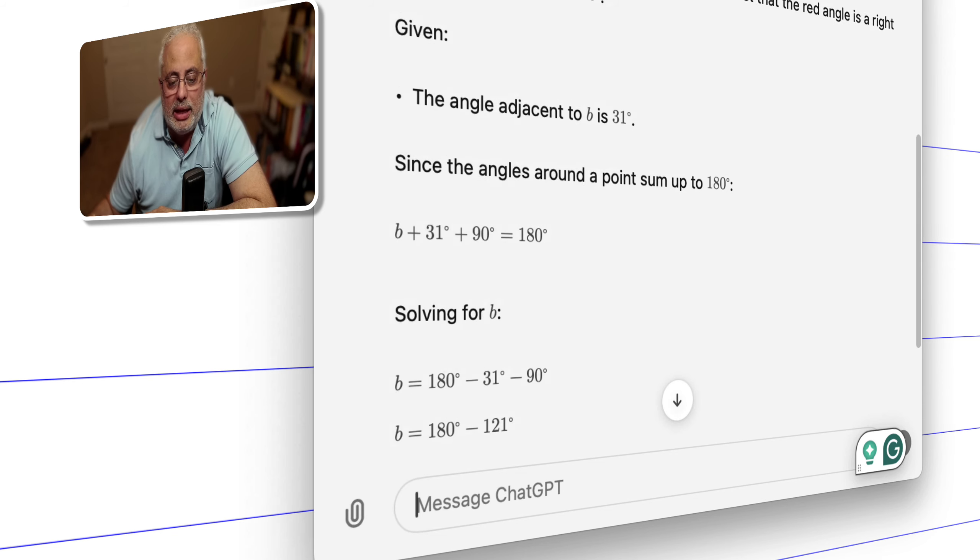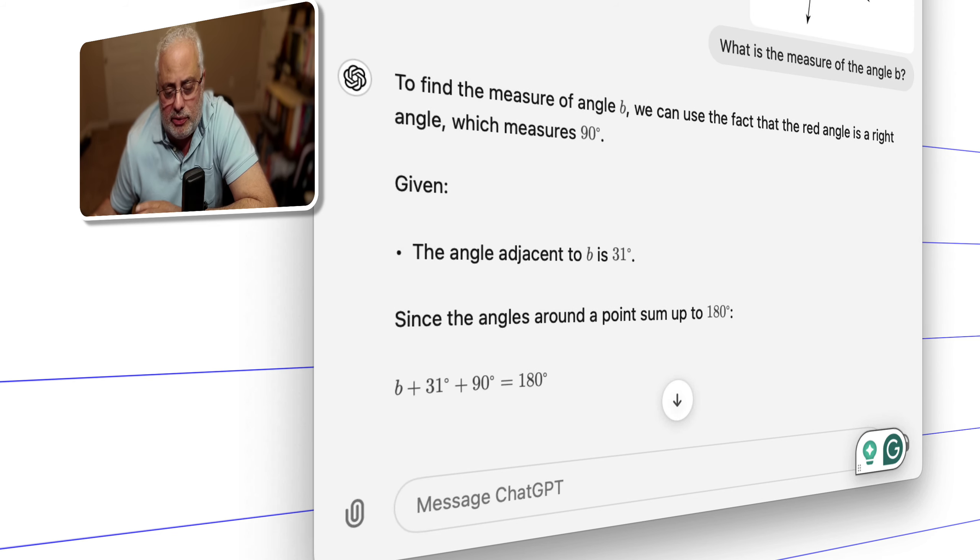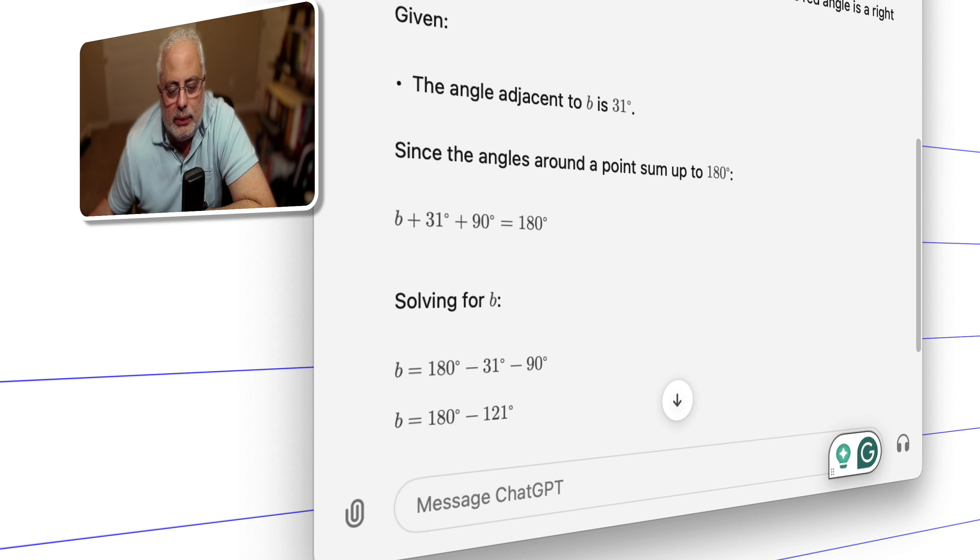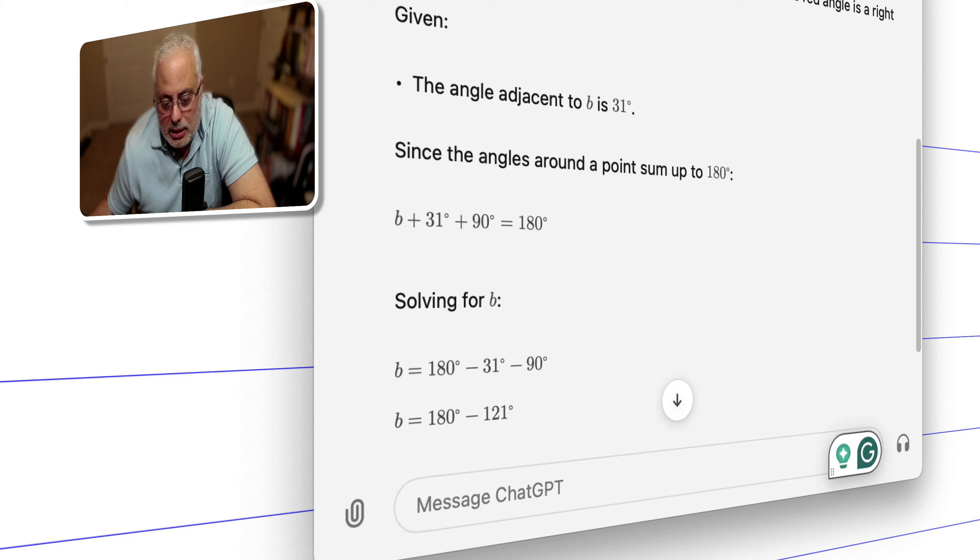Okay, very nice. I'm going to show you how to find the measure of the angle b, we can use the fact that the red angle is a right angle, which is good.